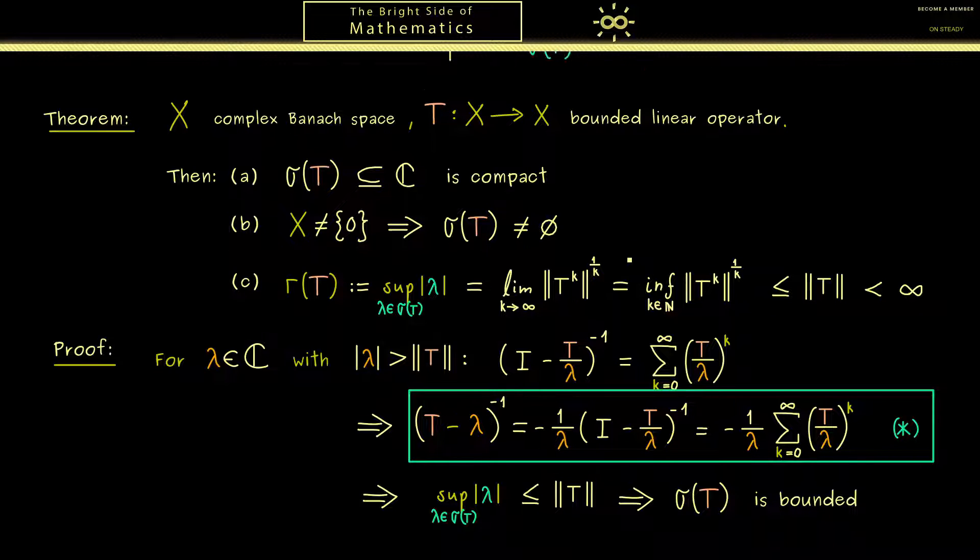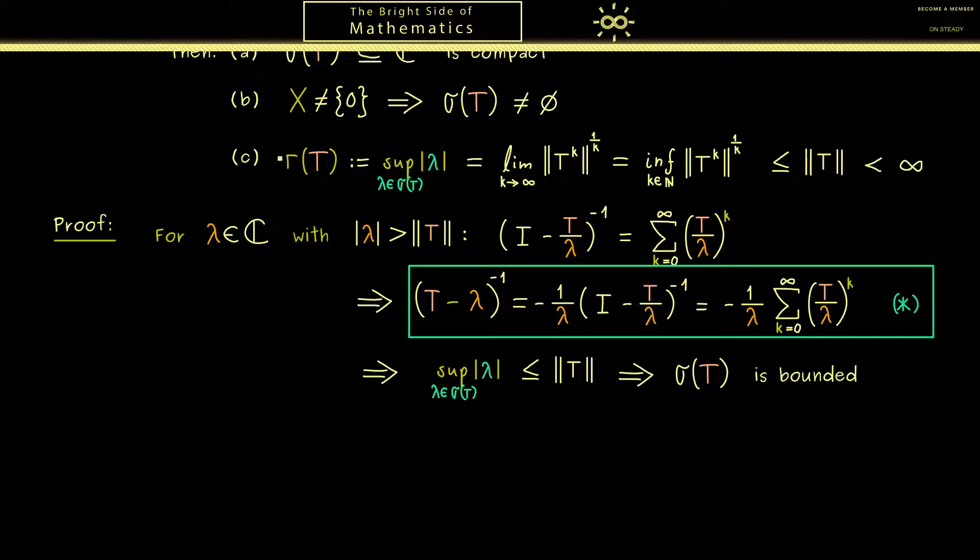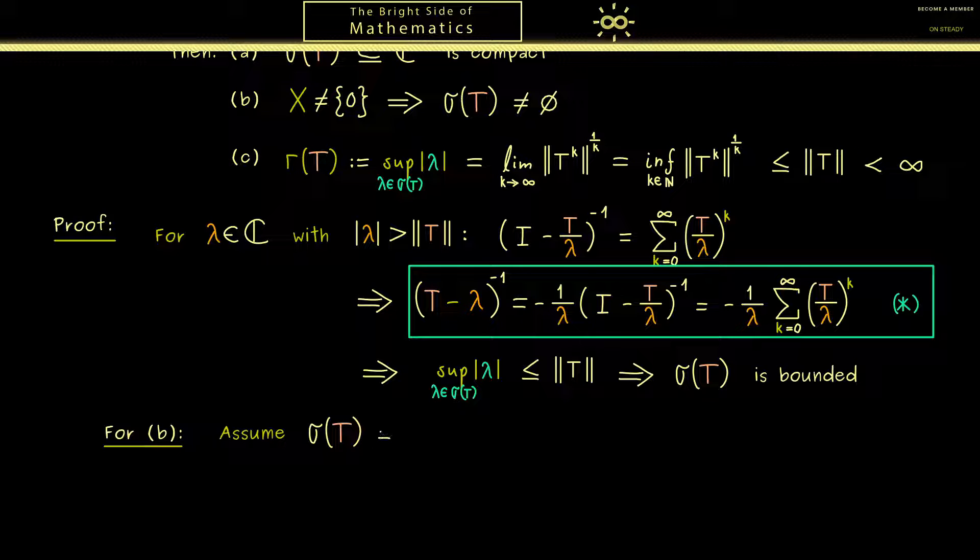However now I want to skip the other parts of c and concentrate on b, because there we can also use immediately some facts from the last video. So here we can do a proof by contraposition. So let's assume that the spectrum of T is the empty set. No spectrum at all means that the resolvent set is the whole complex plane. So rho of T is C.